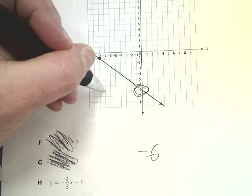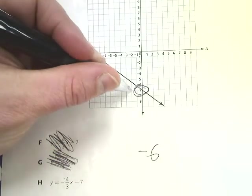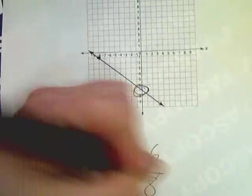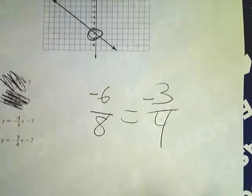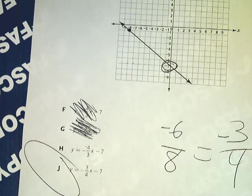And then I'm going to the right: one, two, three, four, five, six, seven, eight. So if I reduce negative six over eight, I get negative three over four, and that answer is right there. So the answer to number 28 on the practice test is J. So hopefully that's kind of helpful.